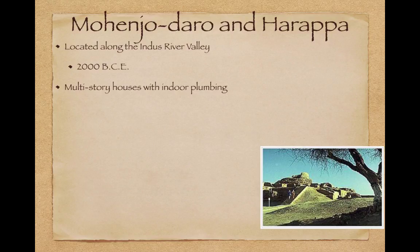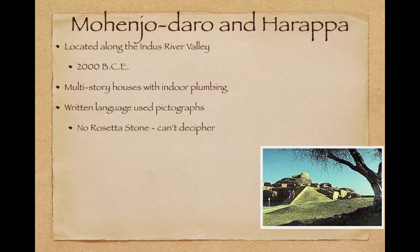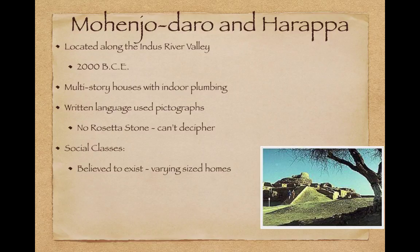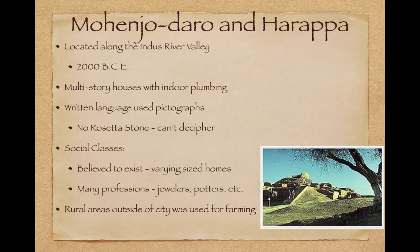There were multi-story houses with indoor plumbing, which is super advanced for its time. The written language used pictographs — symbols or pictures to represent ideas. There's no Rosetta Stone equivalent discovered, so historians can't decipher what these pictographs mean and don't fully understand the written language yet. Social classes are believed to have existed based on varying sized homes. There were many professions such as jewelers and potters. Rural areas outside the city were used for farming, but this civilization was abandoned around the 19th century BCE.